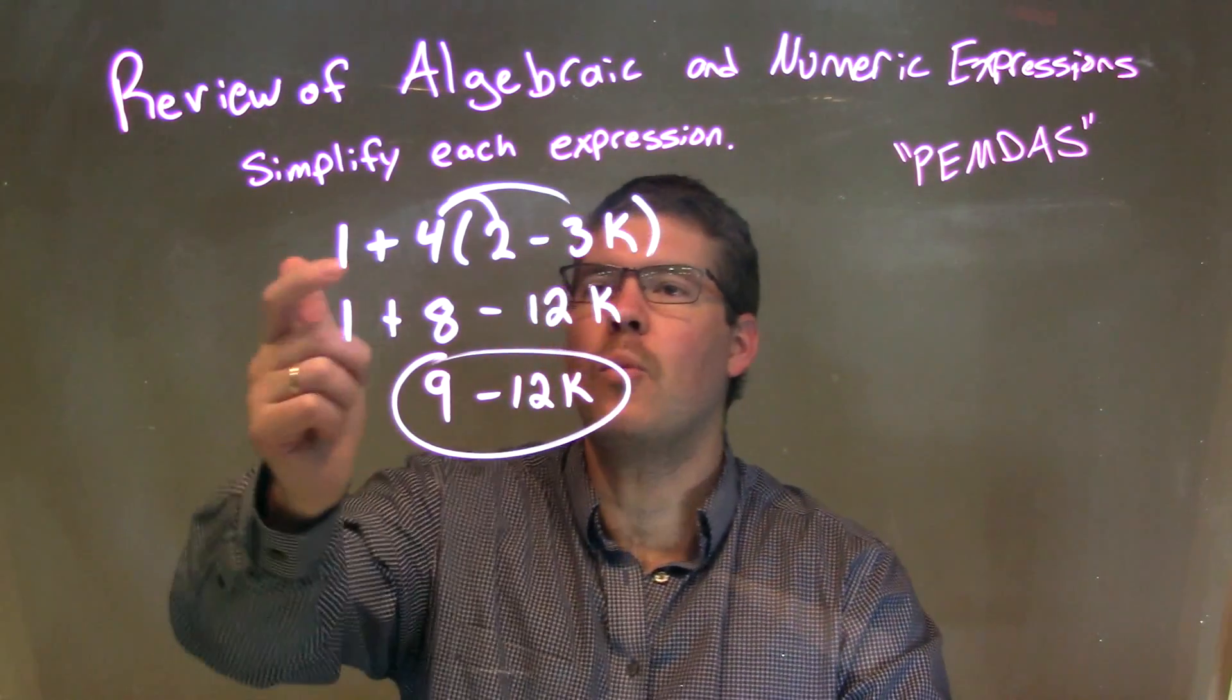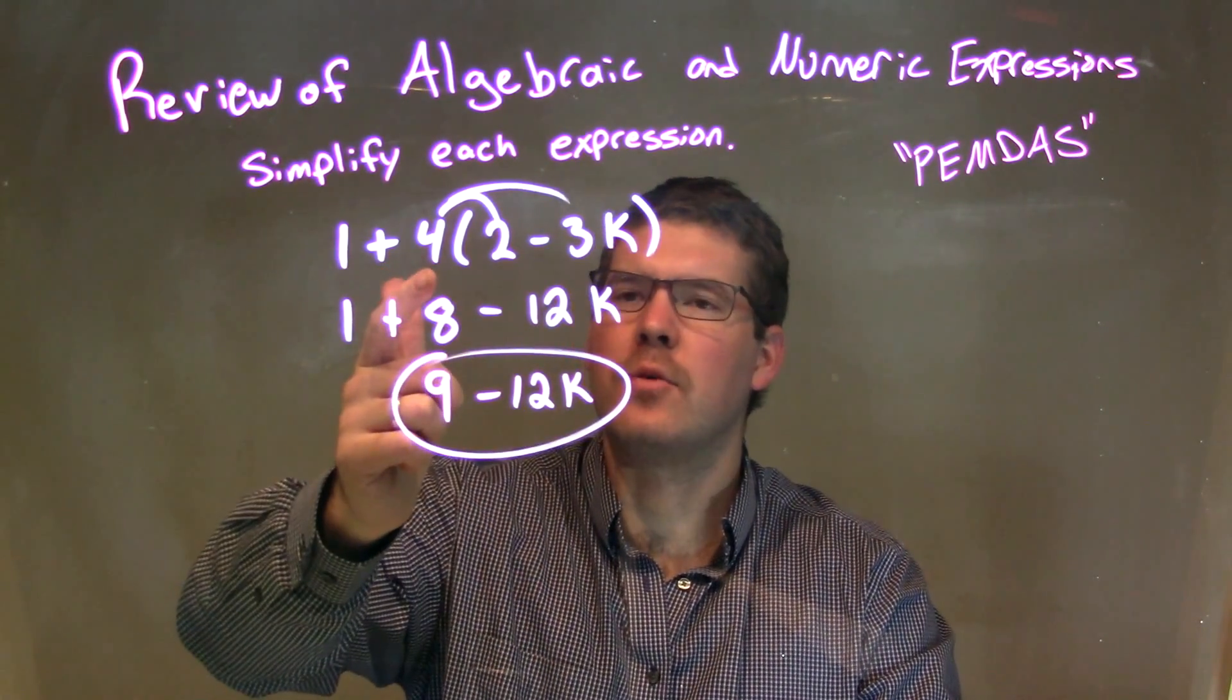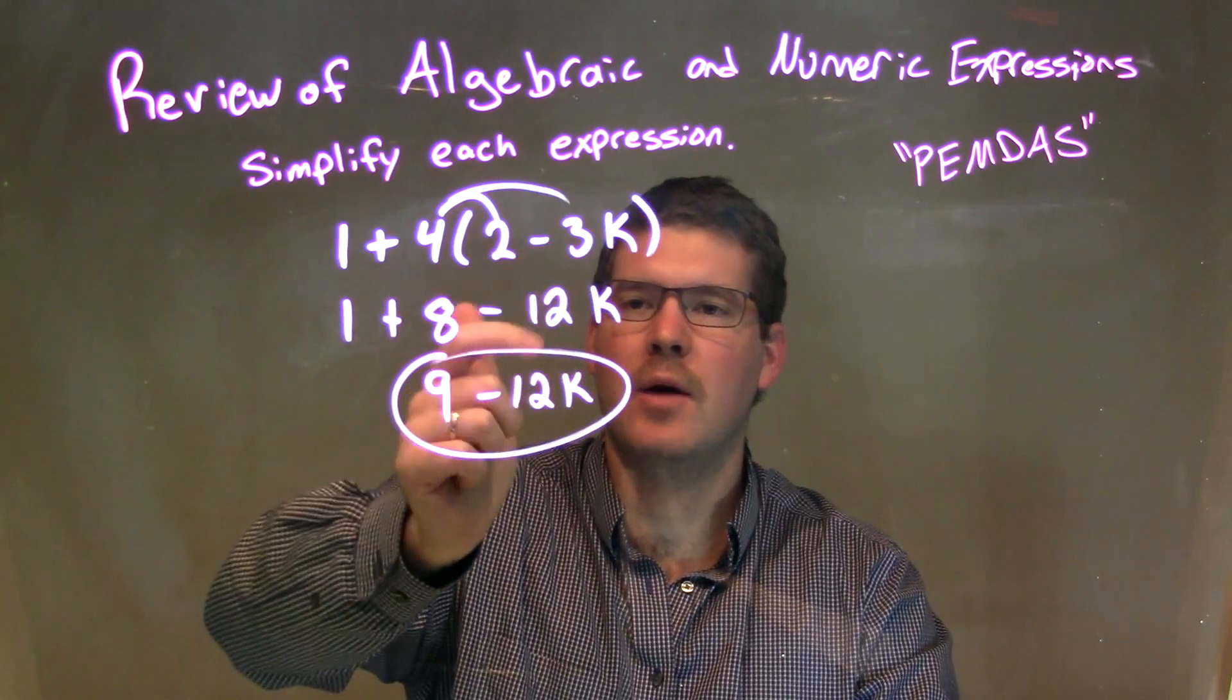So let's recap. We're given 1 plus 4 times parentheses 2 minus 3k. Well, I distributed the 4 across. I went to both parts. 4 times 2 is 8. And 4 times the minus 3k is minus 12k.